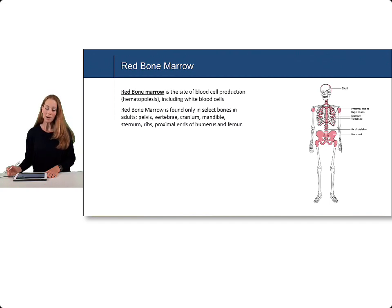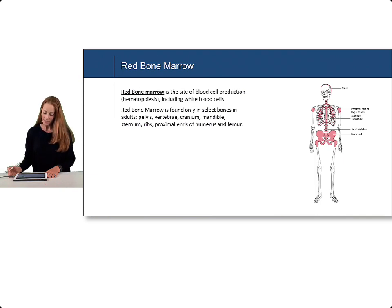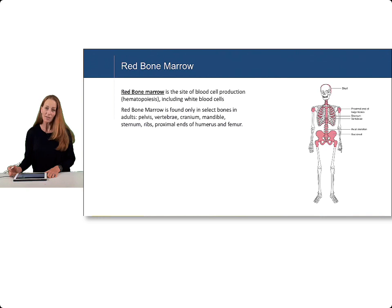Red bone marrow is found only in select bones in adults: the pelvis, the vertebrae, the cranium, the mandible, sternum, ribs, and the proximal ends of the long bones — the humerus and the femur.